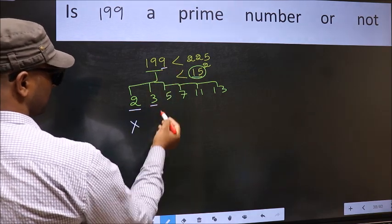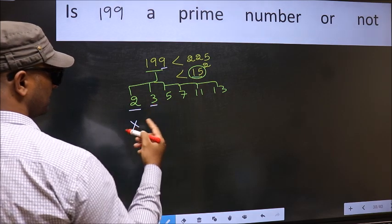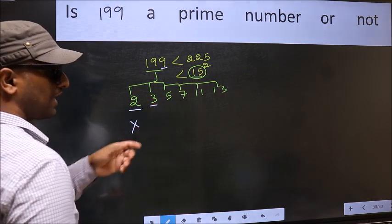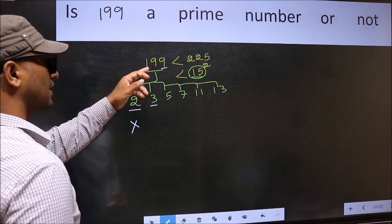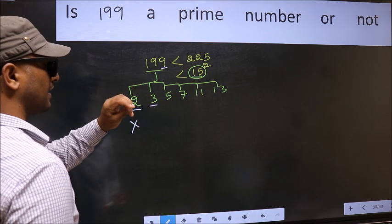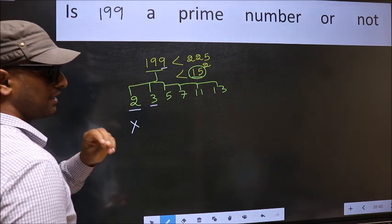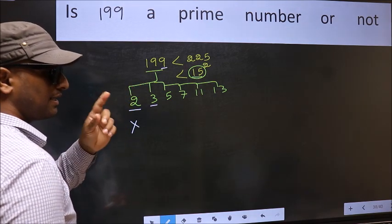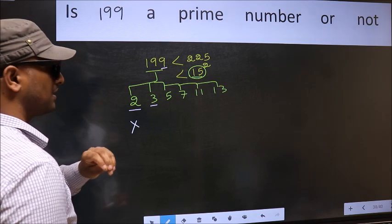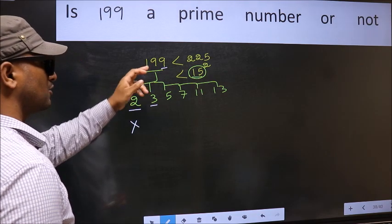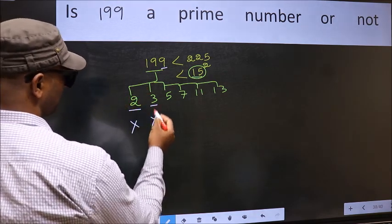Next, number 3: to check divisibility by 3, add the digits — 1 plus 9 plus 9, we get 19. And 19 is not divisible by 3, so 199 is also not divisible by 3.